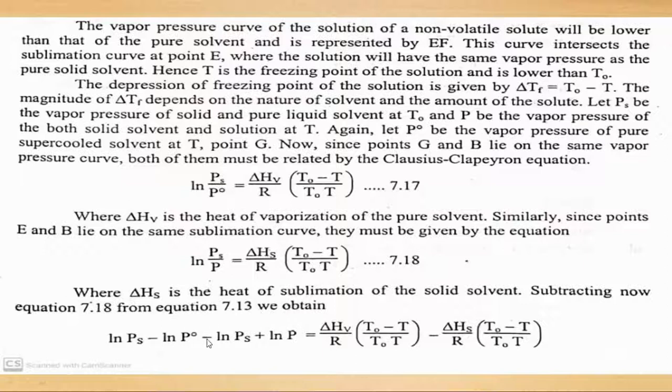Subtracting now equation 7.18 and 7.13, we obtain: log(p_s) - log(p_not) - log(p_s) + log(p_not) = ΔH_v/R(1/T_not - 1/T) - ΔH_s/R(1/T_not - 1/T).